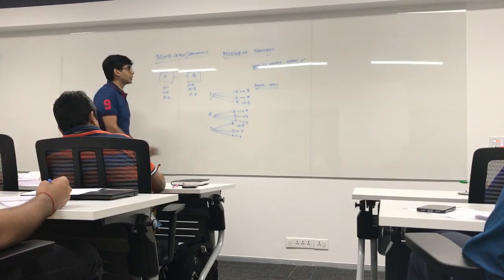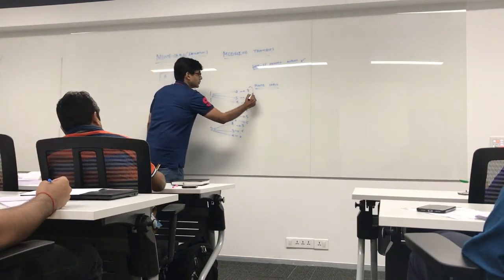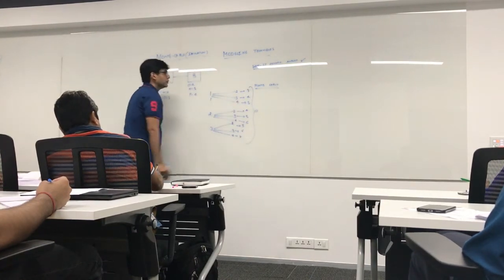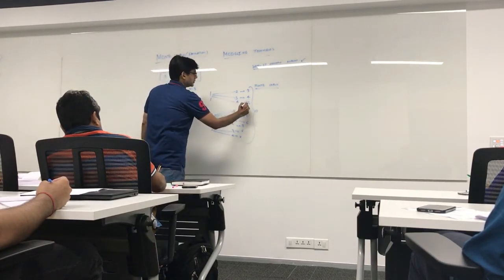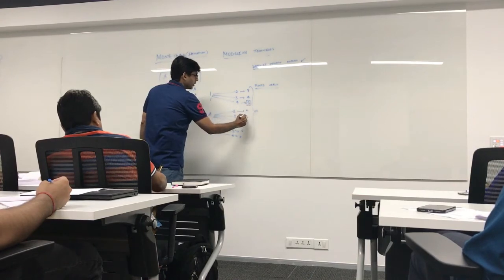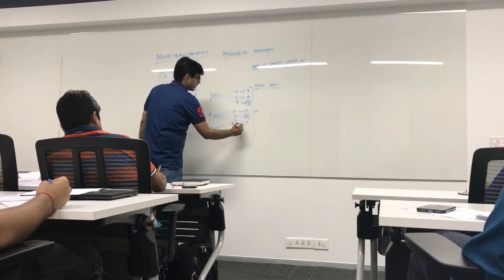Now what did you notice from these outcomes? If you see these outcomes, which is the duration that repeats most of the times? 5. 5 is coming how many times? 3 times.